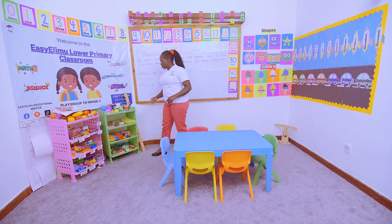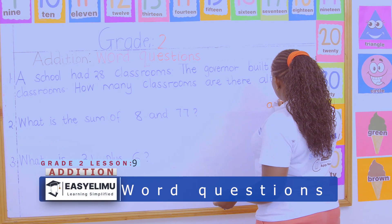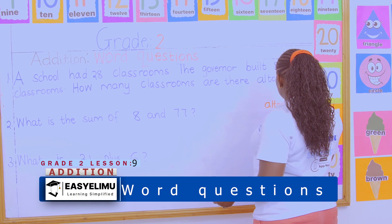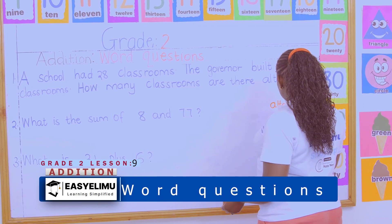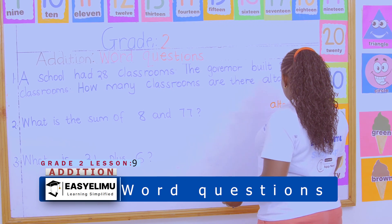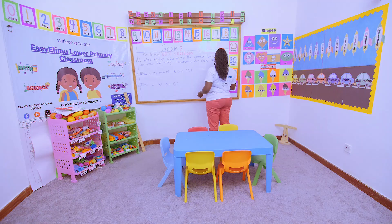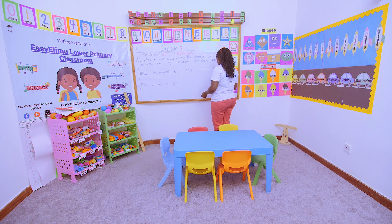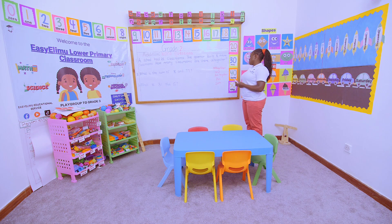Do you remember our vocabulary corner for addition? Let's go through it. We said our words are: all together, put together, plus, sum — as in 'what is the sum of this and this' — and together. Those are the key addition vocabulary words.